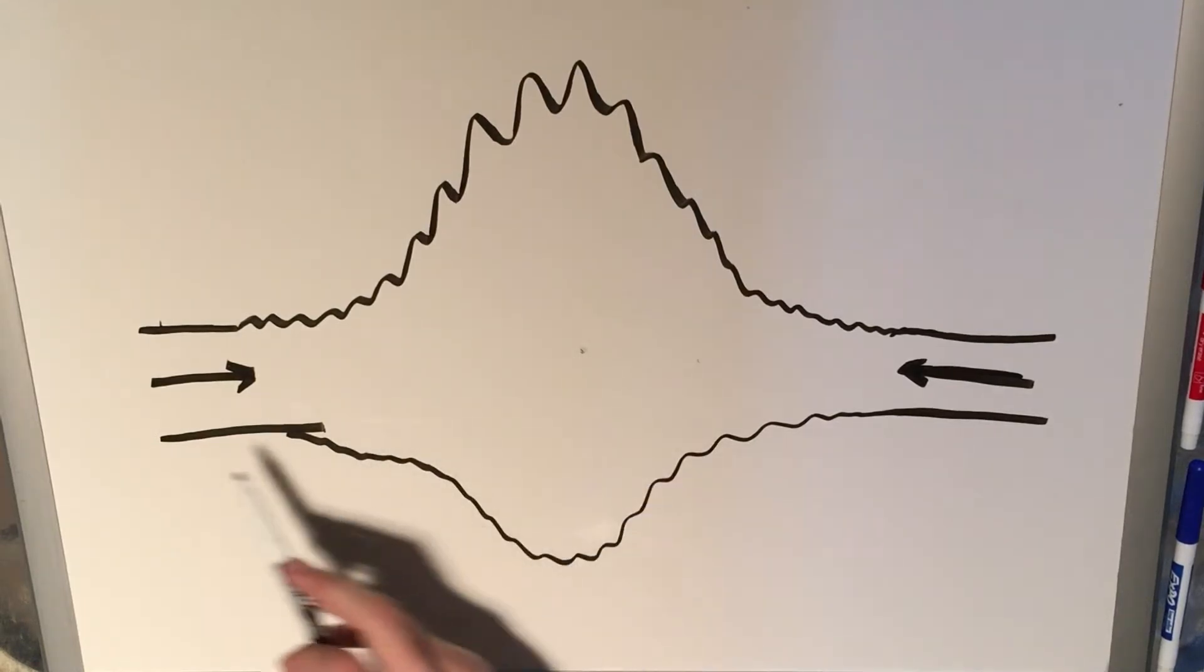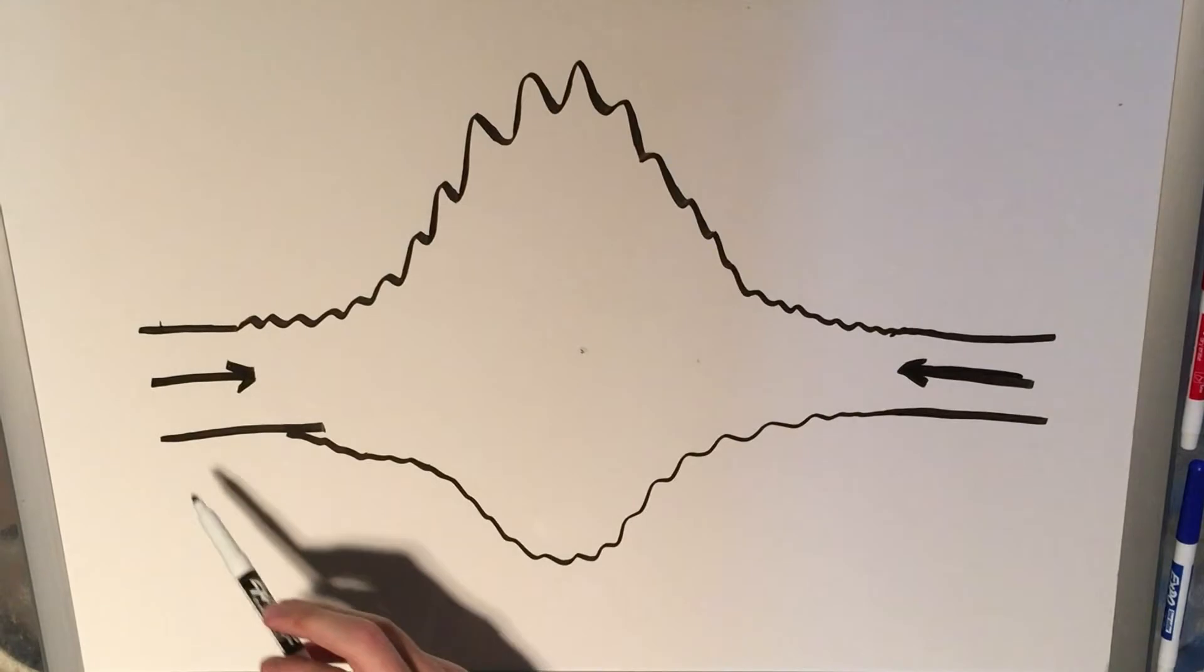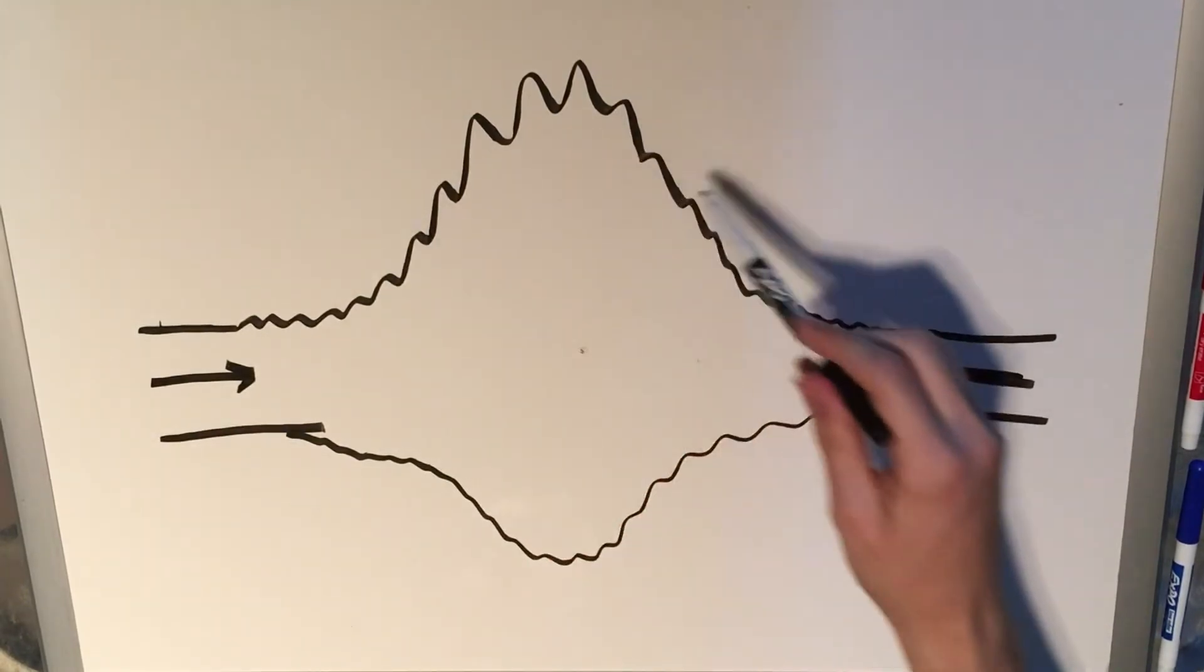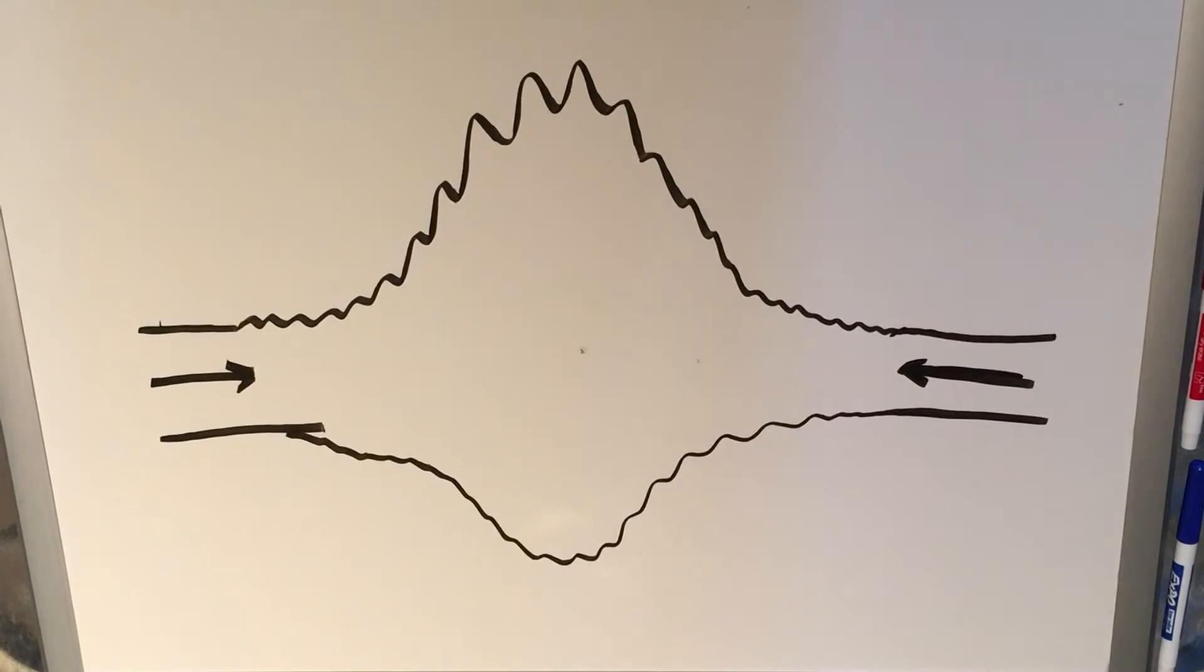This is a diagram of the Earth's crust at a convergent plate boundary. We have two continents coming together, represented by these arrows, and you can see that the mountain range forms in between the two of them.